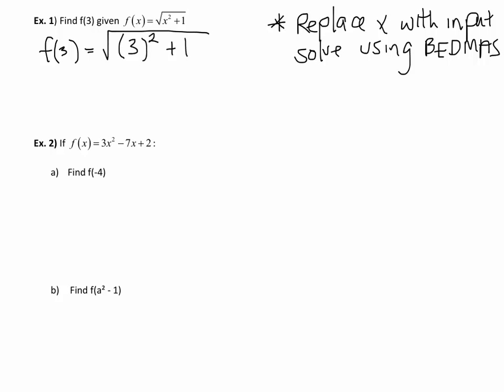Anywhere that we've got an x we are going to substitute in a 3. I like to keep them in brackets because when we get to some of the trickier examples with negatives or more than one term, it helps us apply our BEDMAS rules correctly. Let's expand this out now. 3 squared is 9 plus 1, that gives us the square root of 10. If this isn't a nice square root, leave it as a radical answer. I don't want to see decimals.